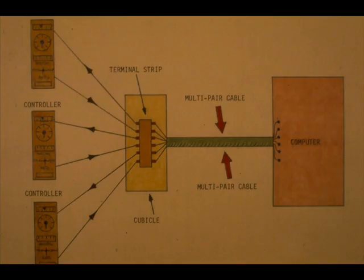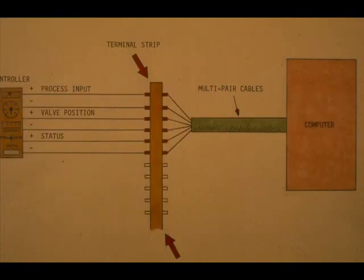The control center wiring also utilizes multi-pair cables. For instance, multi-pair cables connect the computer and controller signals. The individual controller signals are connected to the computer signals at a terminal strip.